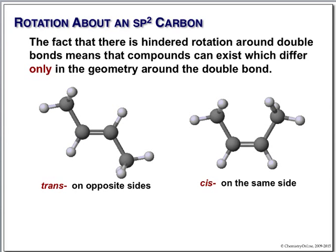A very notable example is vision itself. The retinal in the back of your retina is actually a cis double bond isomer. The way vision works is that retinal will absorb a photon of light, the electrons go to an excited state, and you can then break this double bond easily — it rotates from the cis to the trans isomer. That is the ultimate chemistry of vision. But typically, rotation around a double bond does not work.